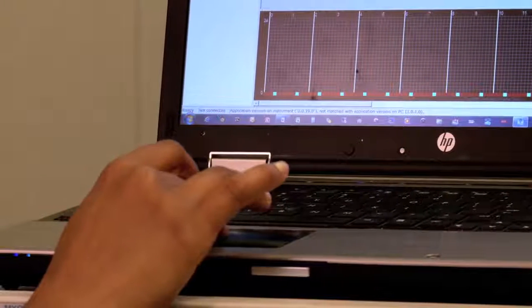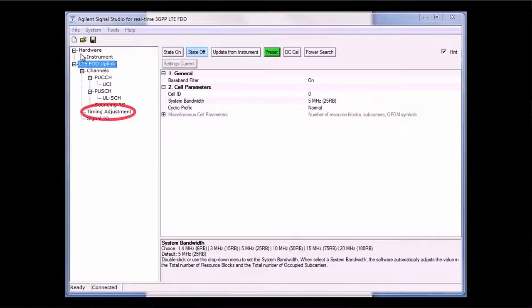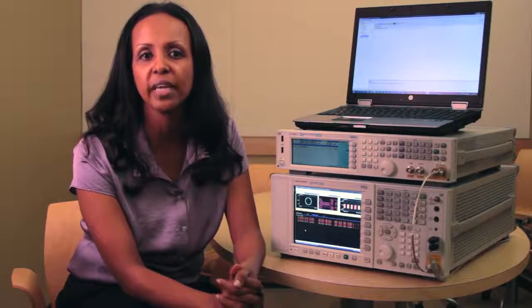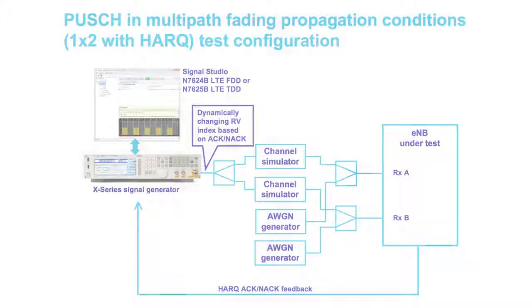As you can see here, the timing adjustment test is one of the performance requirements, and this requires signal generators to be able to accept a feedback signal from the eNodeB under test — this is where you would go to set up that particular test. The X-Series signal generator's real-time capability can accept an external feedback signal received from the eNodeB. For our setup, we are using a predefined sequence to simulate HARQ closed-loop feedback.